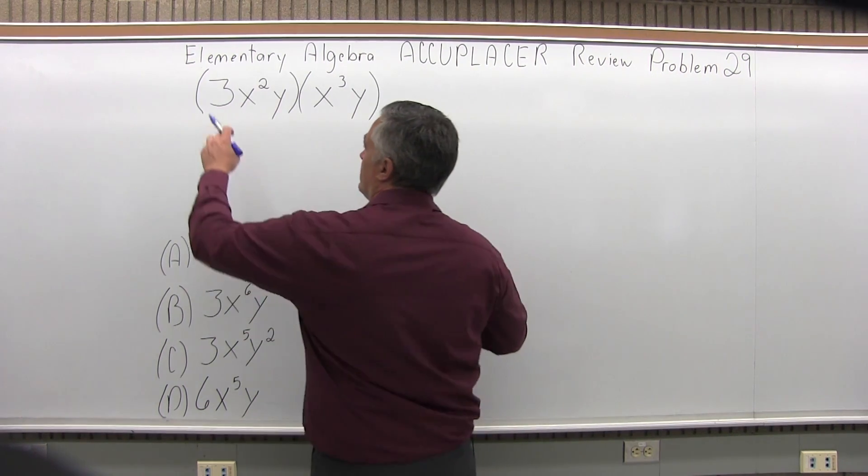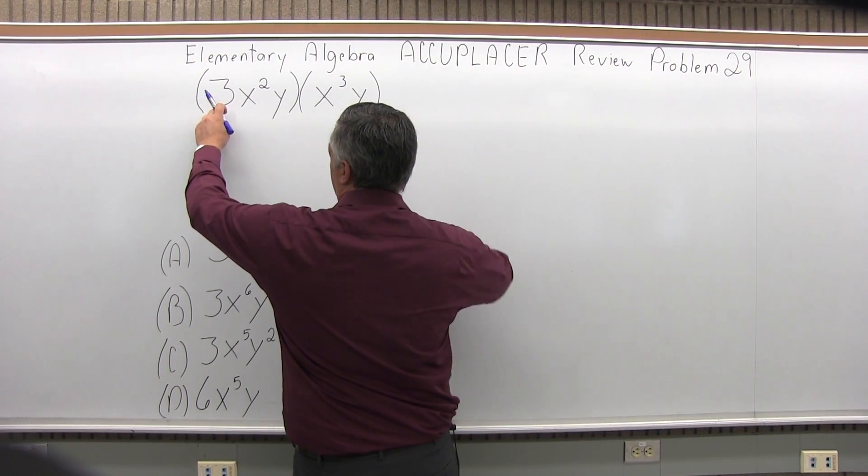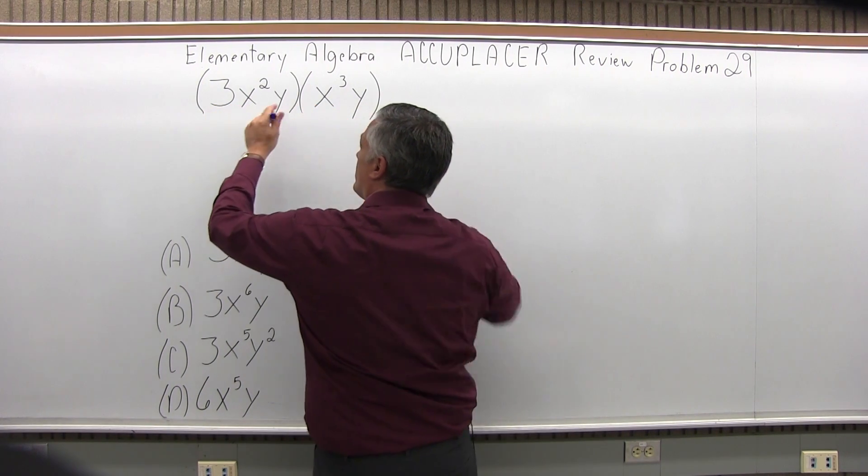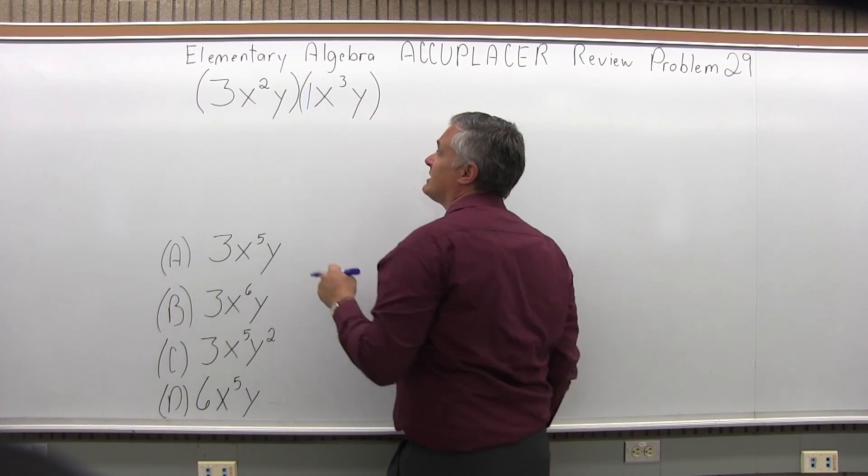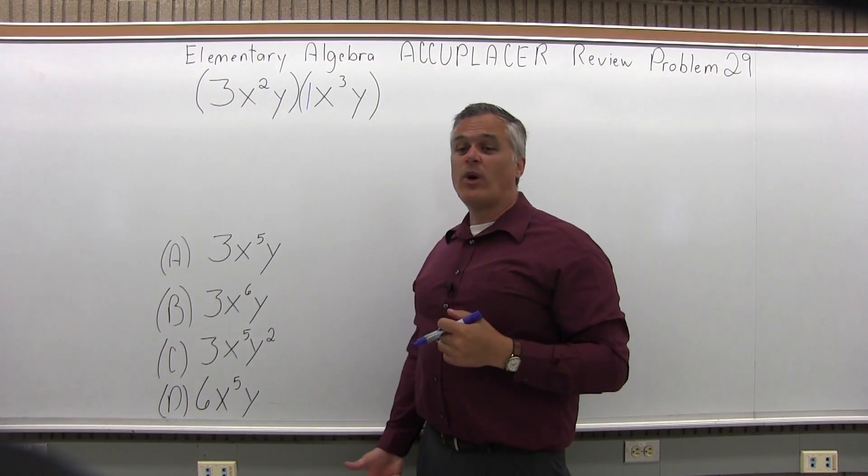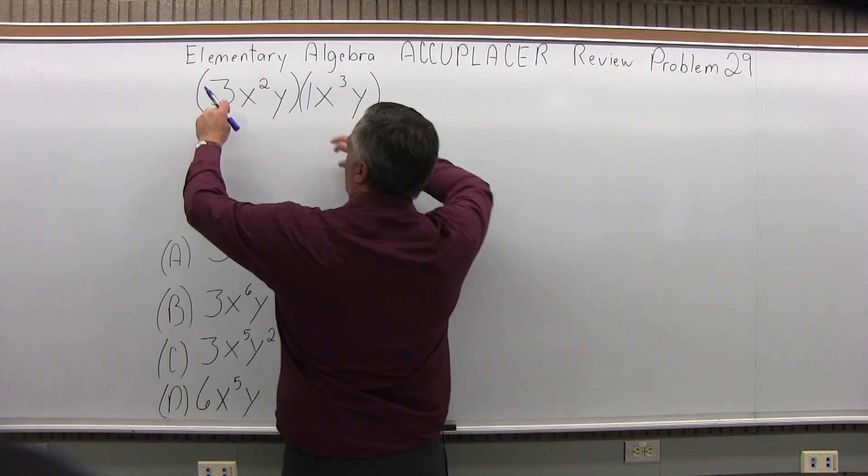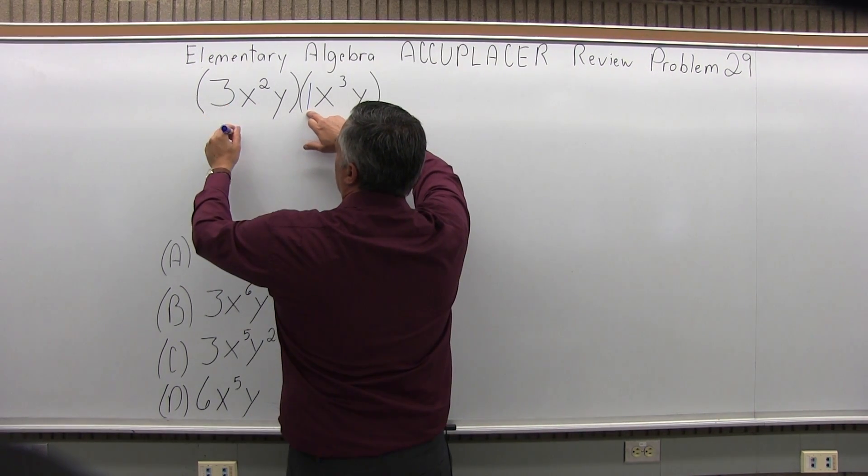Let's start with the numbers. The first set of parentheses is 3 and the second set, there's no number written but you can assume it's a 1. So 3 times 1 gives me 3.